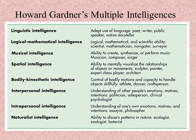Gardner believed in linguistic intelligence — that's language — with examples like poets, writers, public speakers, and native storytellers. It could vary from culture to culture how you display this. Logical-mathematical intelligence means people might do very well in science, especially math and physics-type science. They think very linearly and are very good at solving problems logically. Some people are very strong in this; others find it very hard to understand how someone thinks that way.